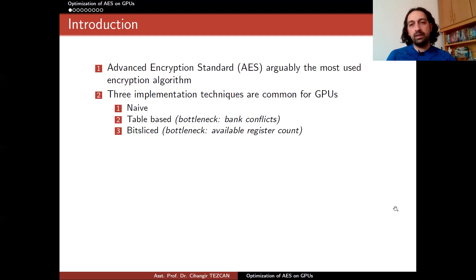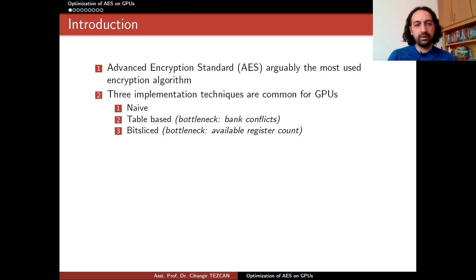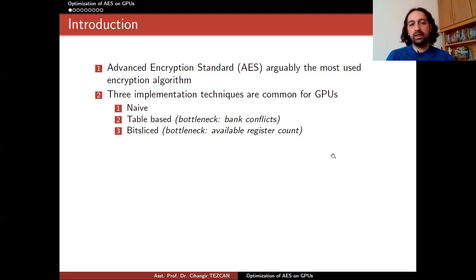In the bit-slice implementation, each bit of the 128-bit block is stored in a different register, and the implementation is performed on every bit. This provides single instruction, multiple data parallelism at the software level. But the bottleneck in this type of implementation is the available register count. GPUs have limited registers per thread, and since we need 128 registers for every bit of the block, bit-slice implementations most of the time cannot achieve 100% occupancy of the GPU.